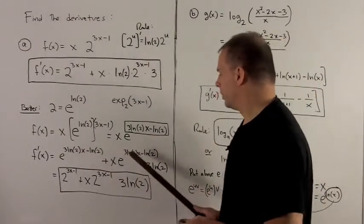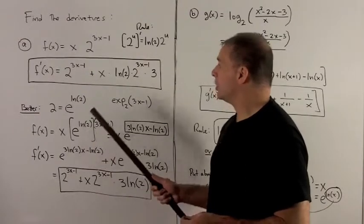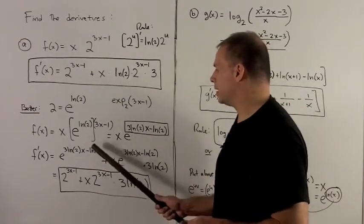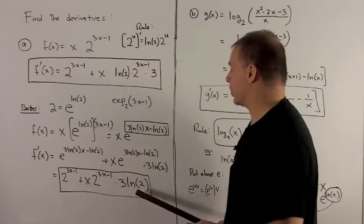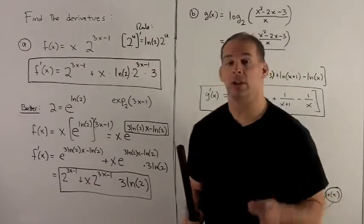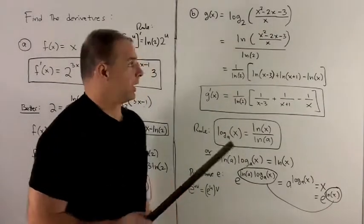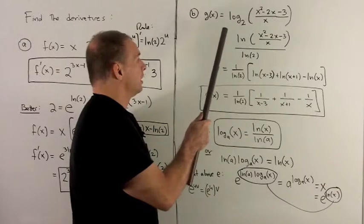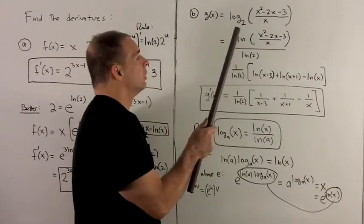Now, we have these two beasts floating around, but just remember, that's just rewriting 2 to the 3x minus 1. So I'm just going to put them back in, and now I have my answer, which agrees with what I got using the rule. Let's try one with a logarithm. We have g(x) equals log base 2 of x squared minus 2x minus 3 over x.